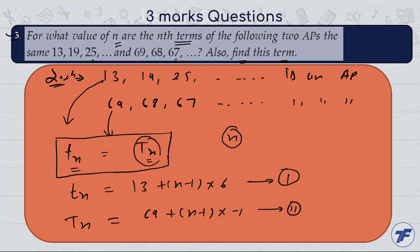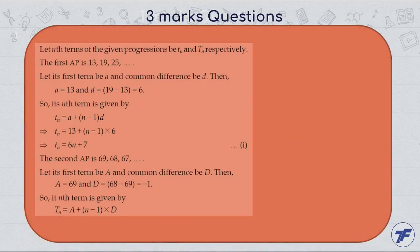Now we will put them equal and then find out Tn. Let the first term be a and common difference be d of the first AP. Then Tn equals a plus (n-1)d, which gives us 6n plus 7.